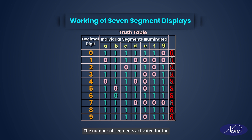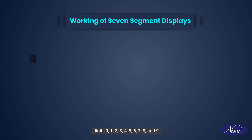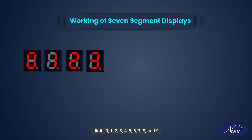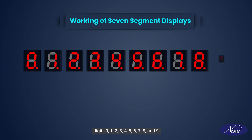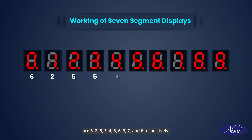The number of segments activated for the digits 0, 1, 2, 3, 4, 5, 6, 7, 8, and 9 are 6, 2, 5, 5, 4, 5, 6, 3, 7, and 6, respectively.